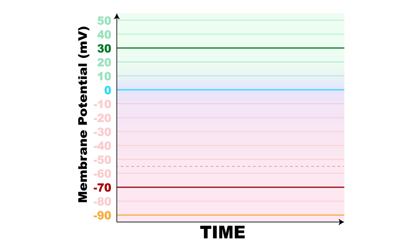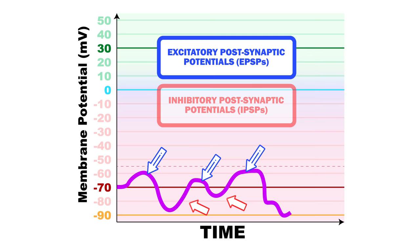A graded potential is a change in potential that can vary in size, with magnitude depending on the intensity of the stimulus, and occurs when the neurons get excitatory postsynaptic potentials, or EPSPs, or inhibitory postsynaptic potentials, or IPSPs.